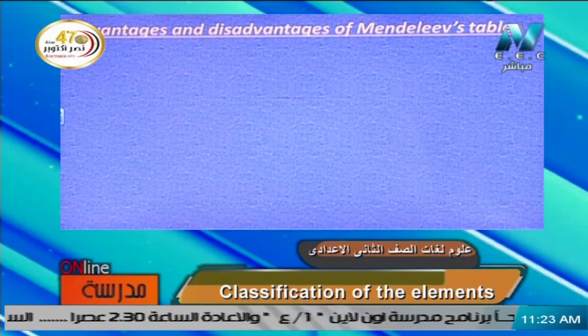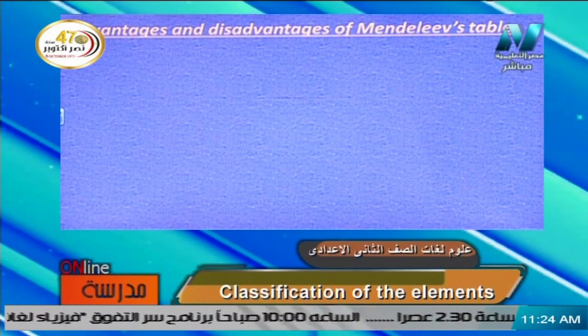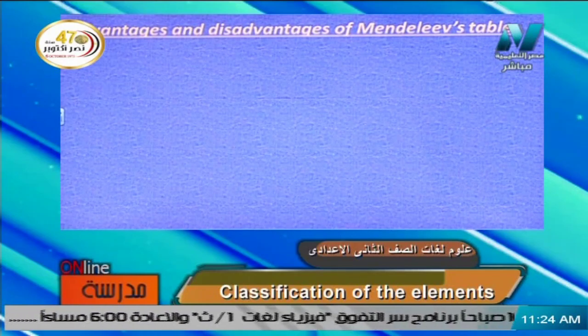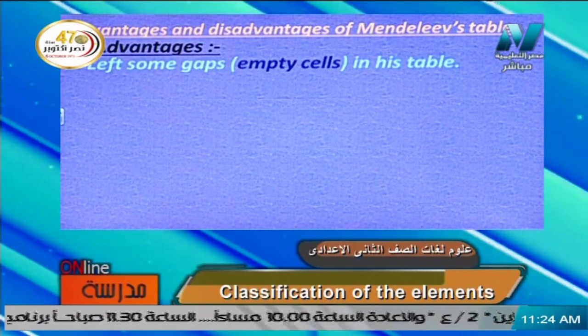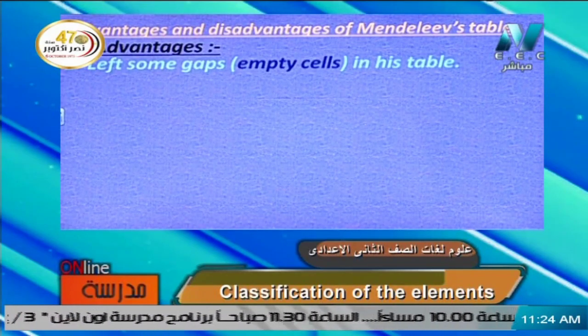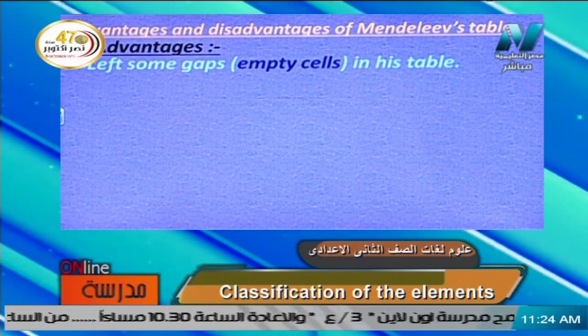Next point in our lesson: advantages and disadvantages of Mendeleev's table. Advantages mean good points; disadvantages mean disturbances or bad points. Advantage number one: Mendeleev left some gaps — empty cells — in his table. How does this become an advantage? Mendeleev left empty spaces in his table because he predicted the discovery of new elements in the future.